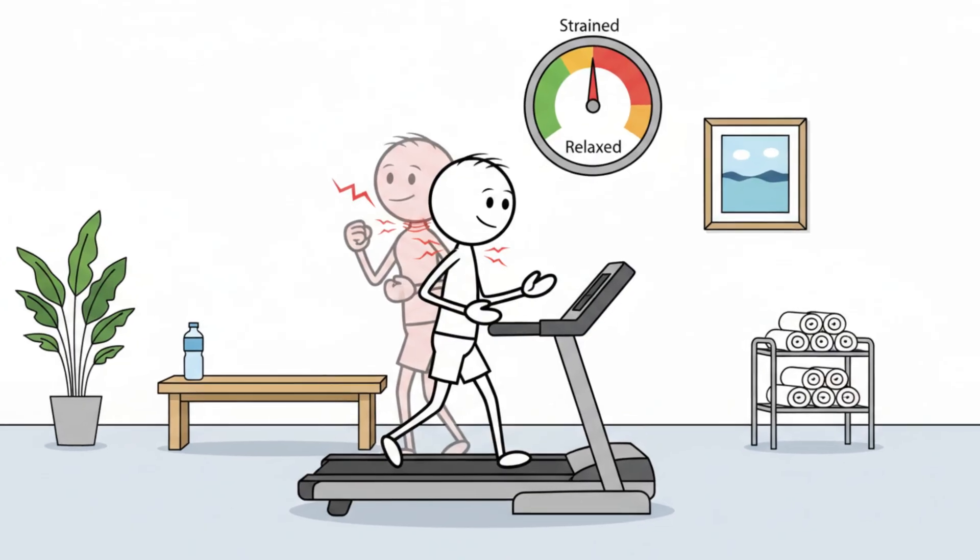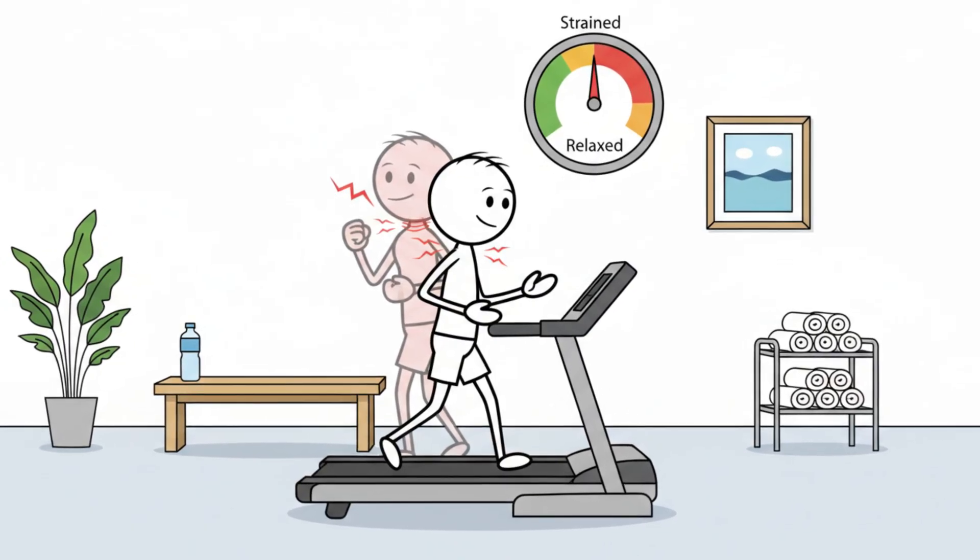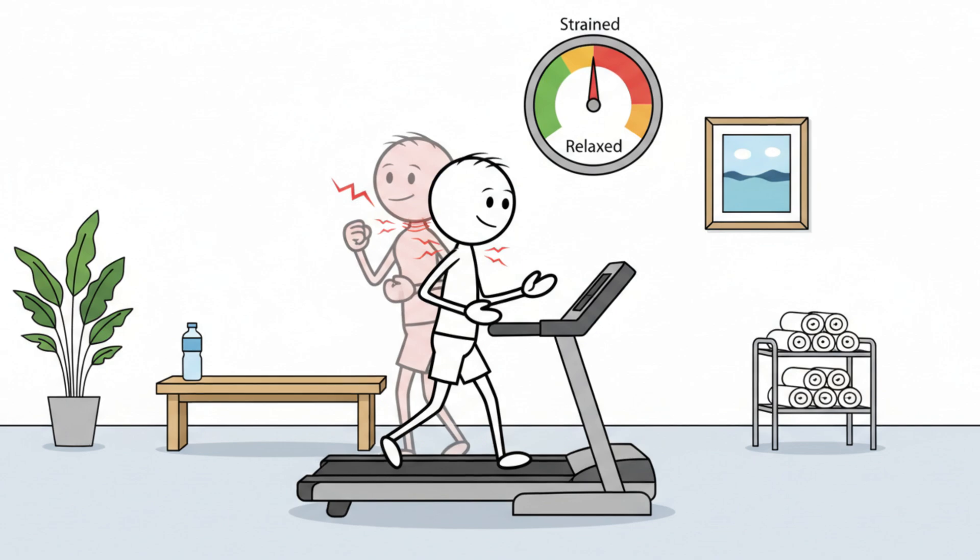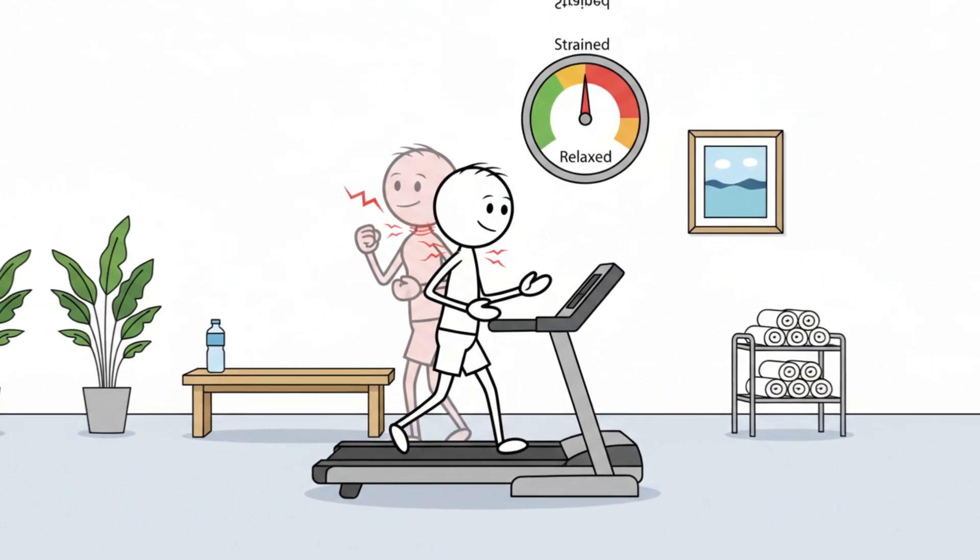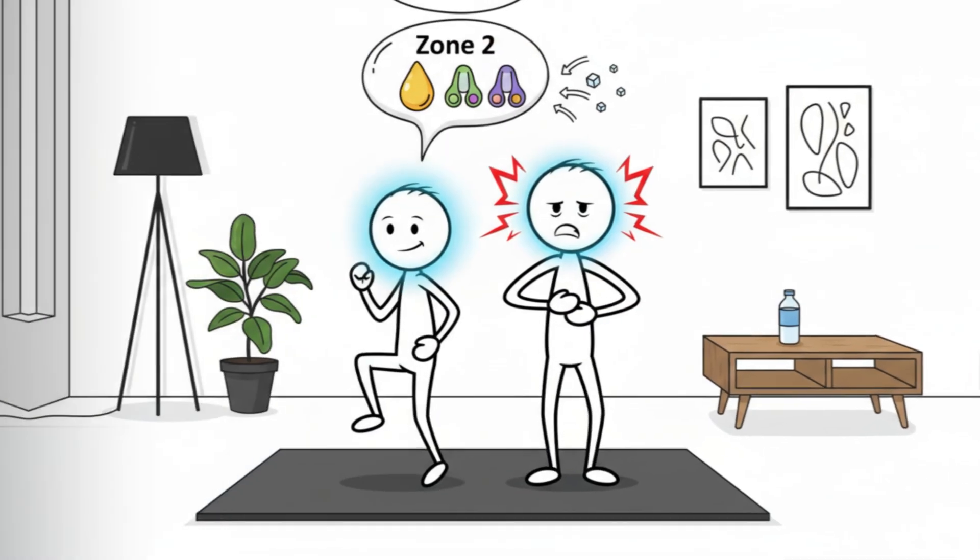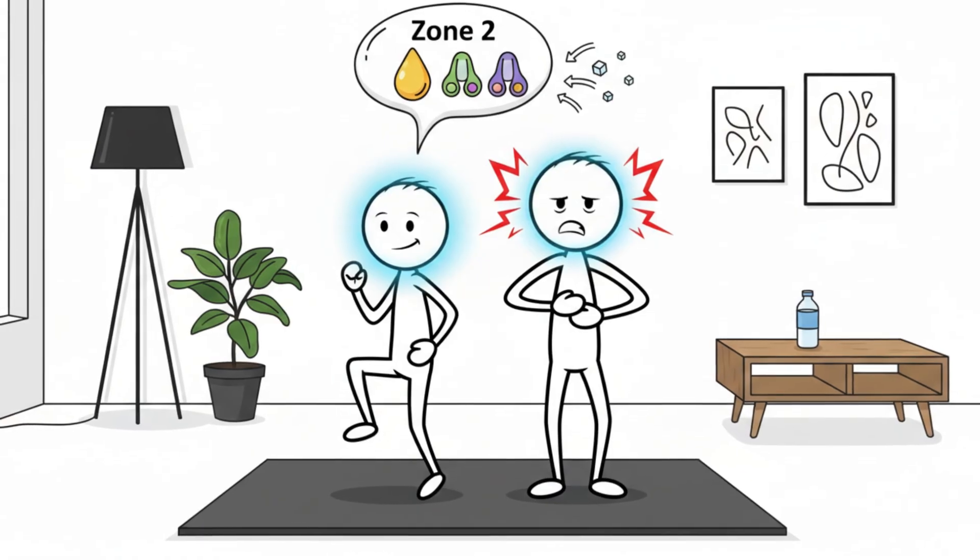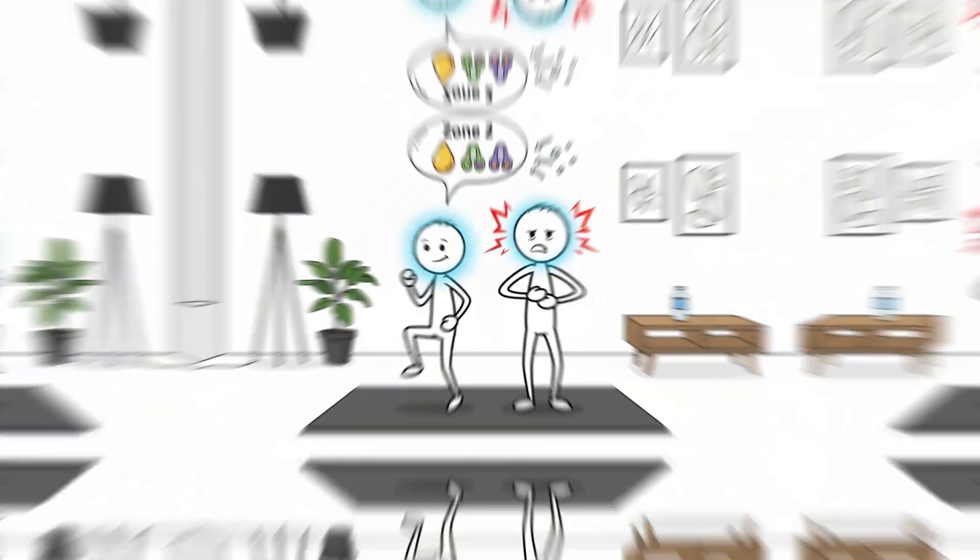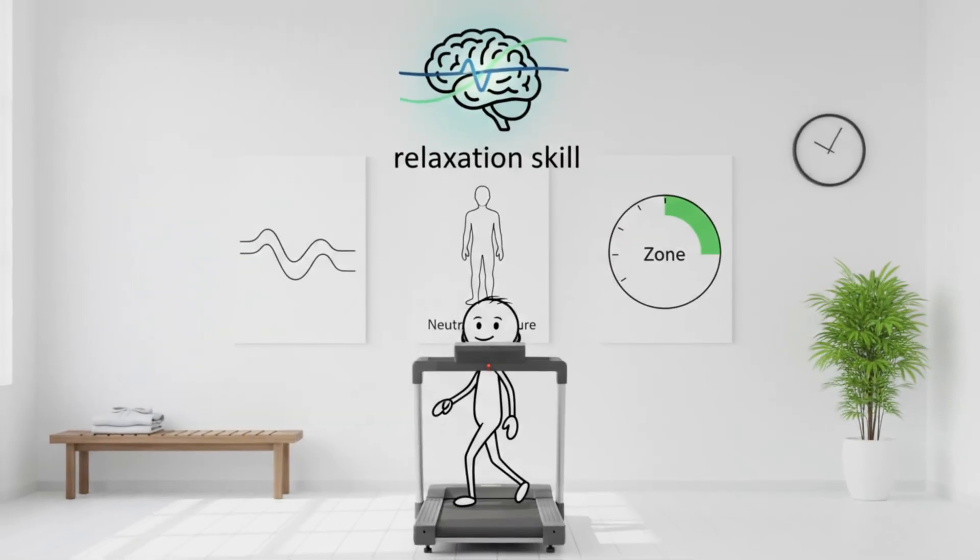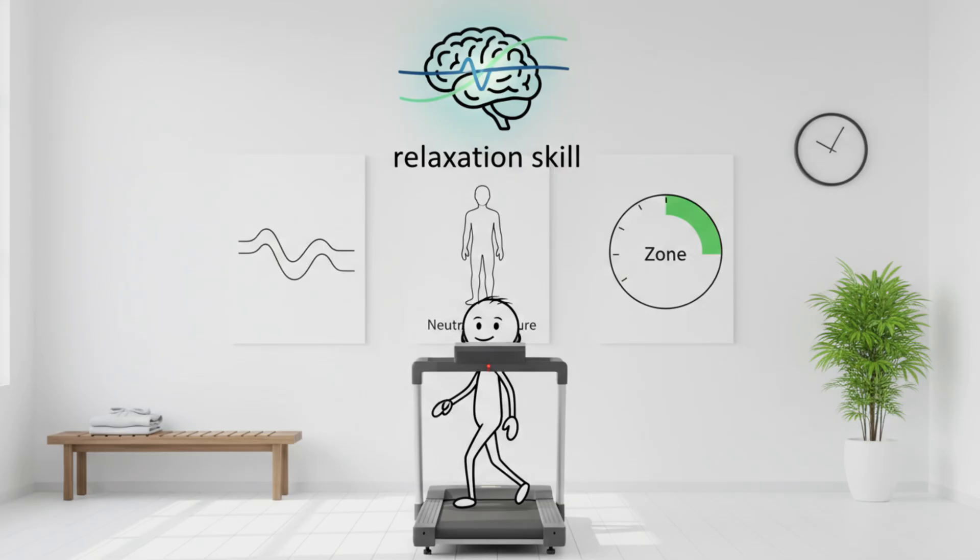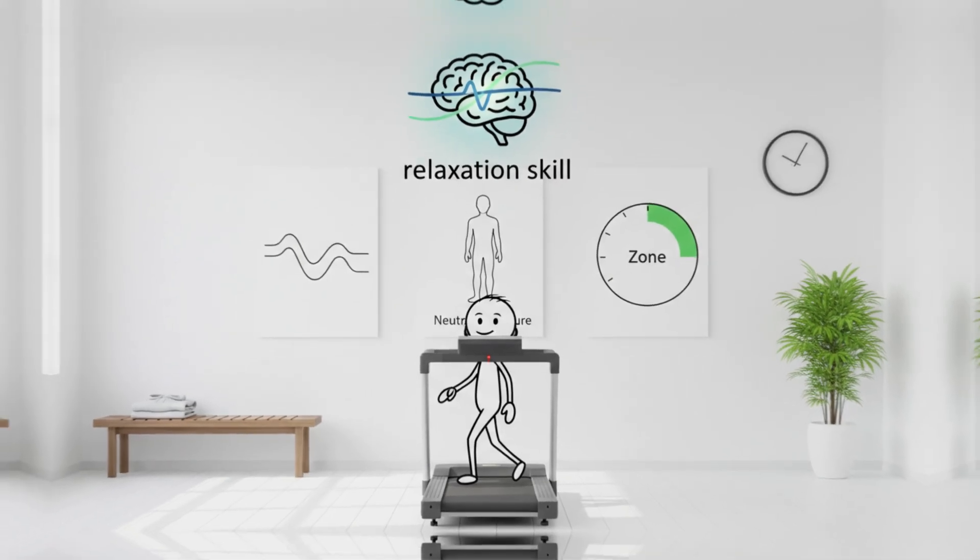Another subtle error is upper body tension. Tight shoulders, clenching your hands, or lifting your chest too high can increase heart rate unintentionally. These shifts may seem minor, but physiologically they nudge you out of the fat dominant zone. Relaxation is a skill in zone 2 training. The solution is simple awareness.